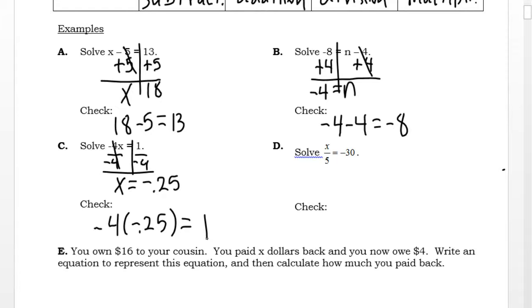My last example has division. So to undo division, we use multiplication. So I'm going to multiply both sides by 5. The divide by 5 and the multiply 5 cancel out. And negative 30 times 5 is negative 150. And if I do negative 150, divide that by 5, I will get negative 30.